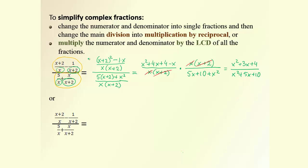To illustrate the second method, we use exactly the same example so you can see the difference in approach. The second method is to multiply the big numerator and the big denominator by the same expression — the lowest common denominator of all four small denominators. In our case, the LCD is x(x + 2), so we multiply both top and bottom by x(x + 2).